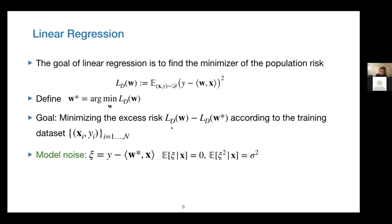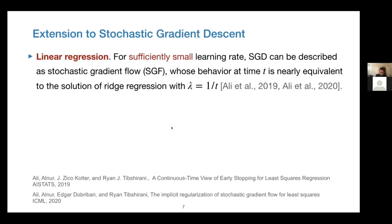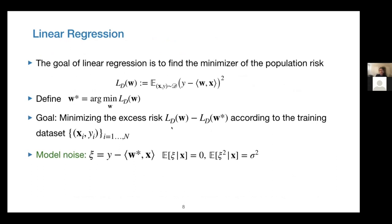Based on these observations, in our work we try to derive the sharpest possible excess risk for stochastic gradient descent for solving linear regression problems. In the rest of this talk I will be focused on the over-parameterized linear regression problem, because without a good understanding of linear regression in the over-parameterized regime, it's almost impossible to say something about deep learning.